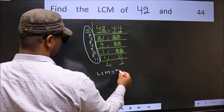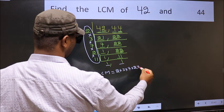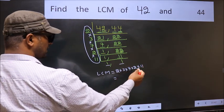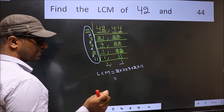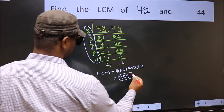That is 2 into 3 into 7 into 2 into 11. When we multiply these numbers we get 924 is our LCM.